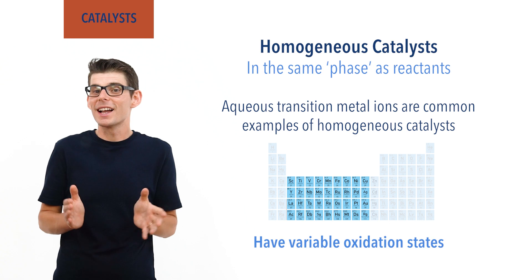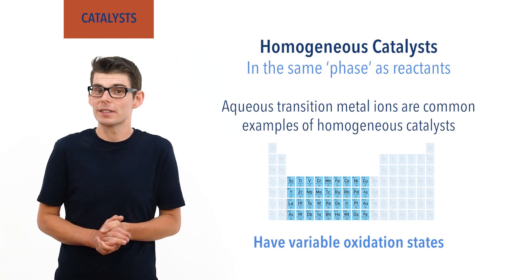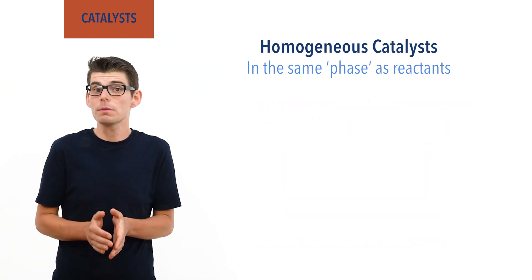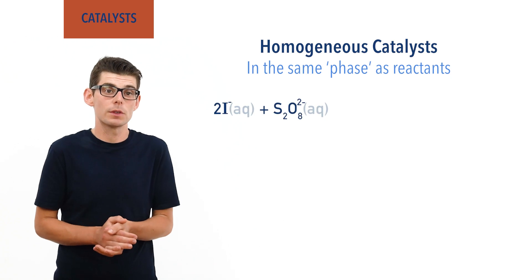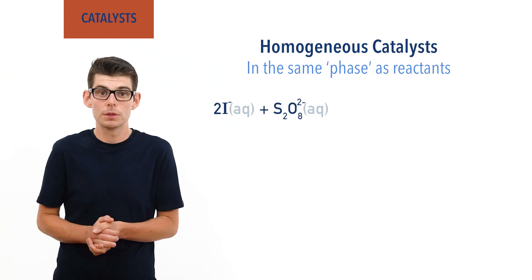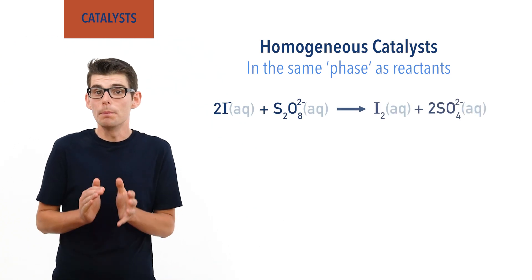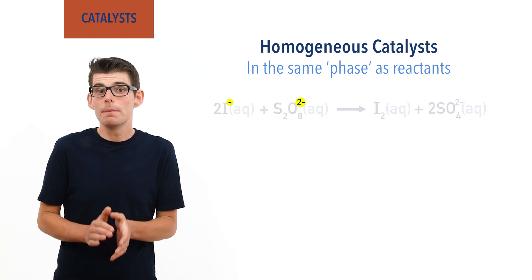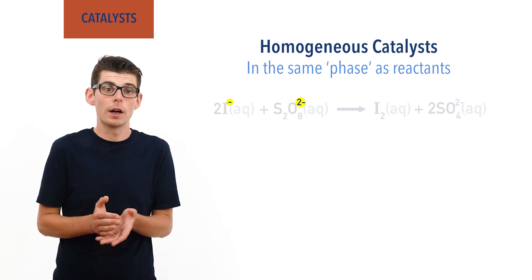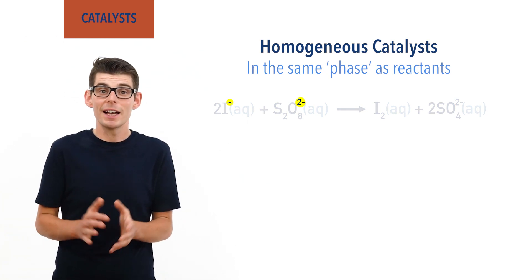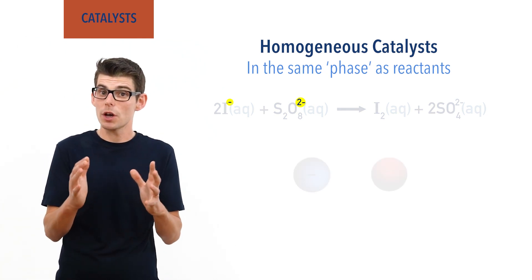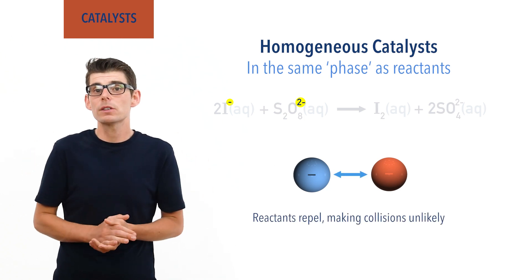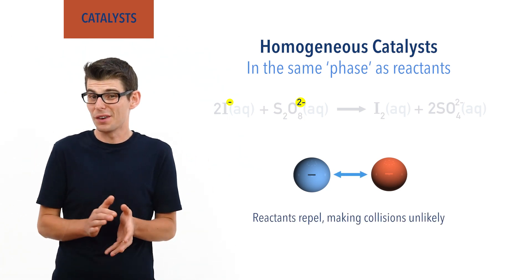A classic example of homogeneous catalysis is the reaction between iodide and thiosulfate ions. Both of these ions are negatively charged, meaning collisions between the two are unlikely as the negative charges of each repel, and this makes the reaction very slow.